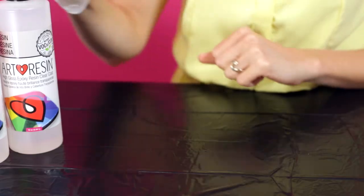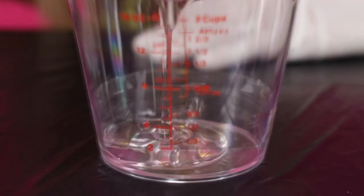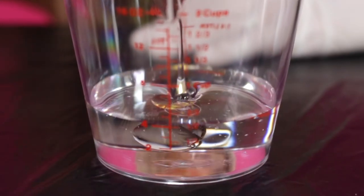With gloves on, pour by volume precisely equal amounts of resin and hardener into a mixing container.